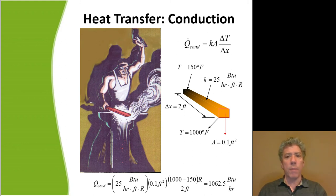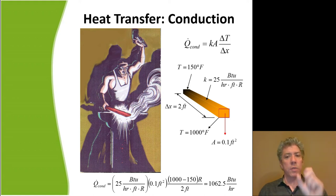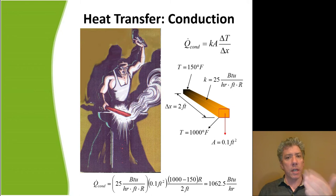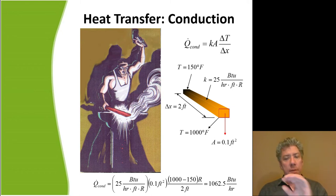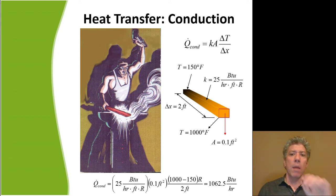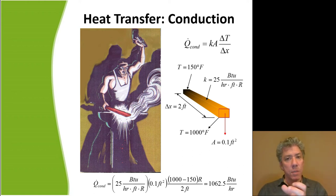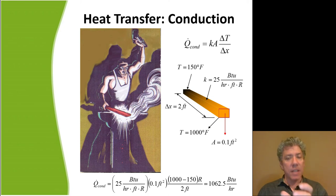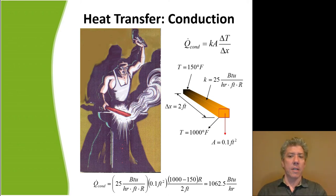The rate of heat transfer Q-dot for conduction equals the thermal conductivity of the material K, times the cross-sectional area available for heat flow, multiplied by the temperature difference between the ends, divided by the distance between the ends — that's what the delta T and delta X are.